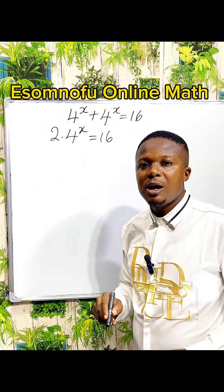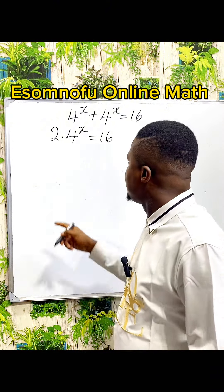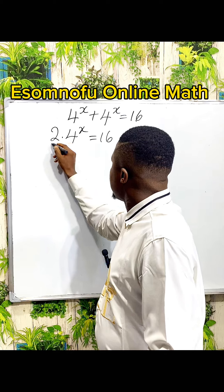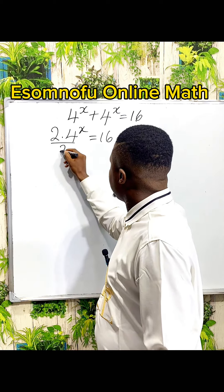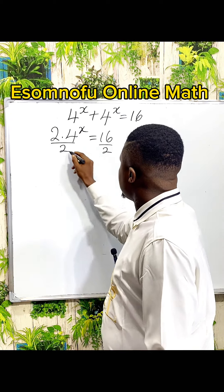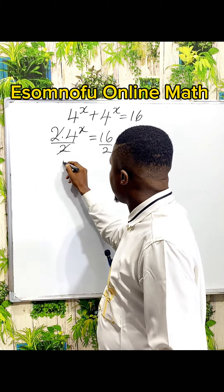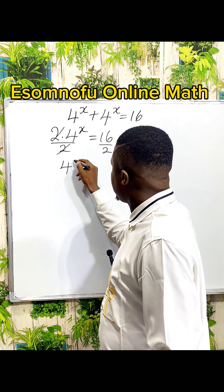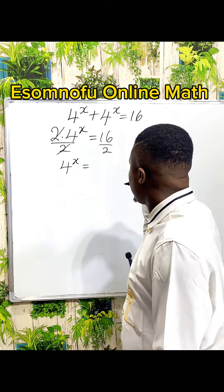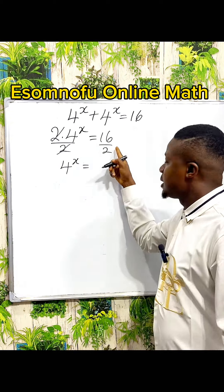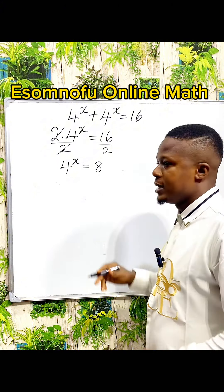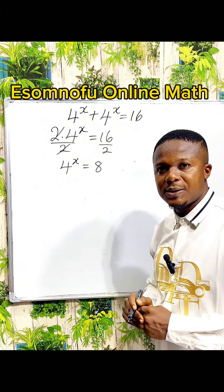Now you can decide to divide both sides by 2. When you do that, you have over 2, over 2 — we cancel out this 2. We are left with 4 to the power of x equal to 16 divided by 2, which is 8.